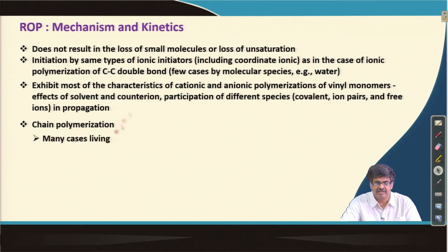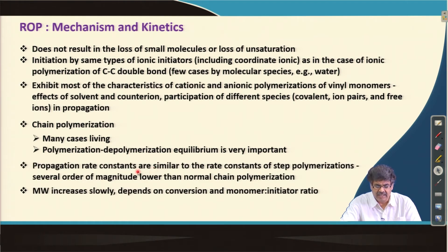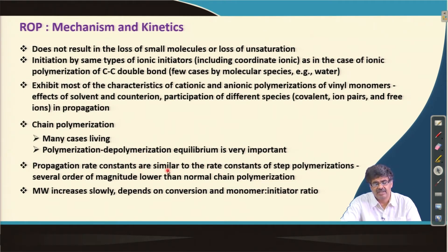Because of ionic initiation, in many cases these are living polymers. Although it is a chain polymerization, the propagation rate constants are actually similar to rate constants of step polymerizations — several orders of magnitude lower than normal chain polymerization. As a result, molecular weight increases slowly, depending on conversion and monomer-to-initiator ratio.